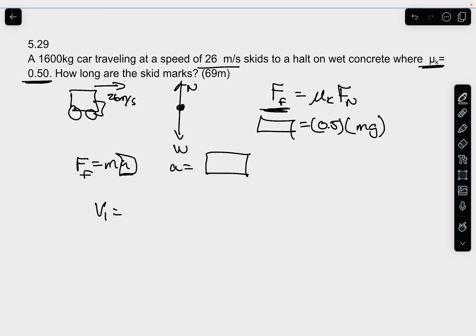v1 to be 26 meters per second, you have v2, he's going to a stop so that's zero, and now